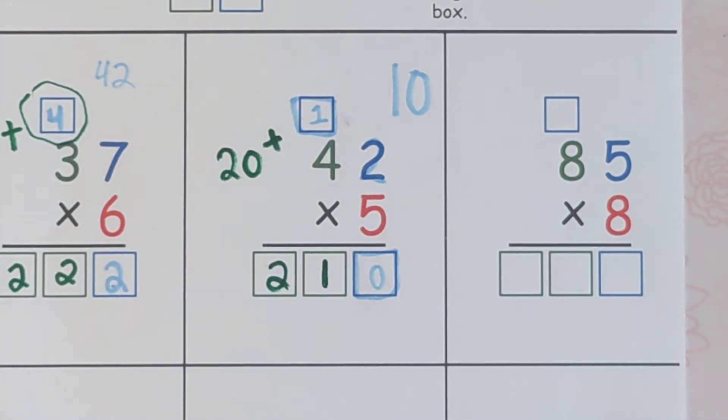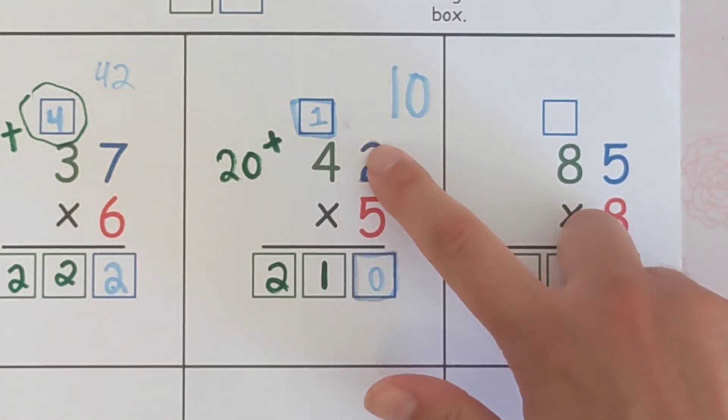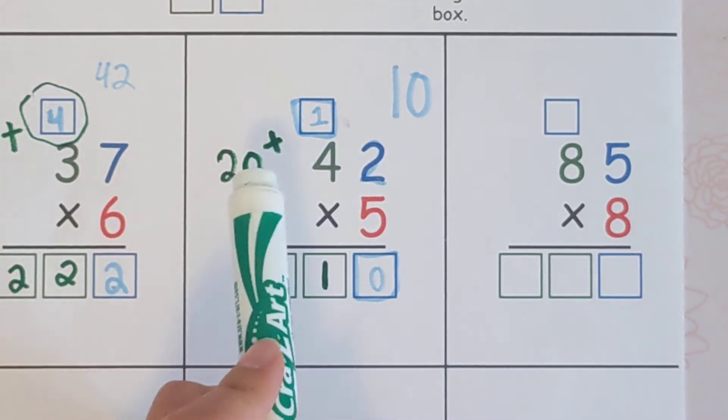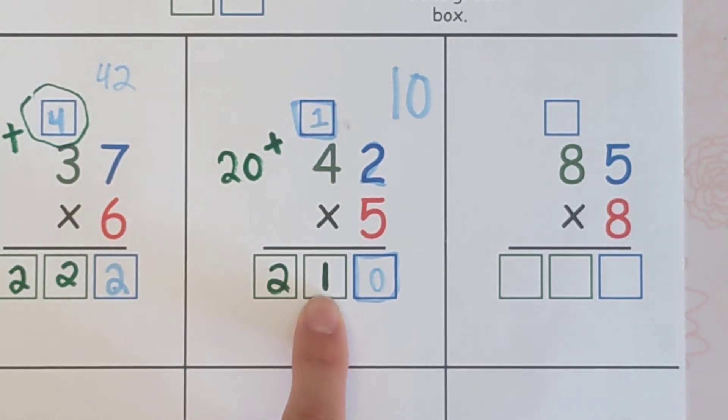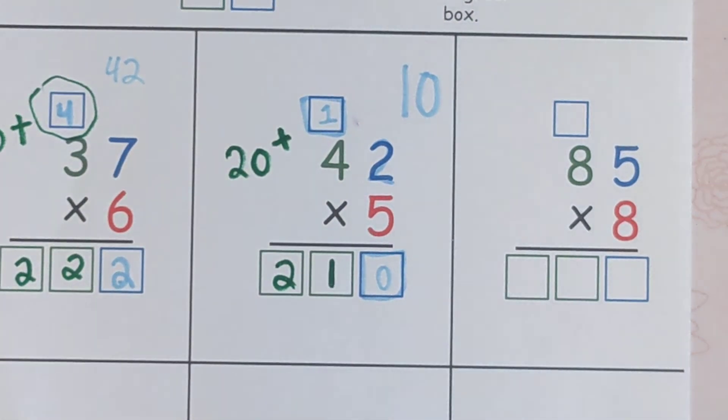We're done. So just to recap, we did five times two, which was 10. And we put the one up here, we carried it, and the zero down here. And then we did five times four, which is 20 plus one is 21. And we put that in here. And our final answer is 210.